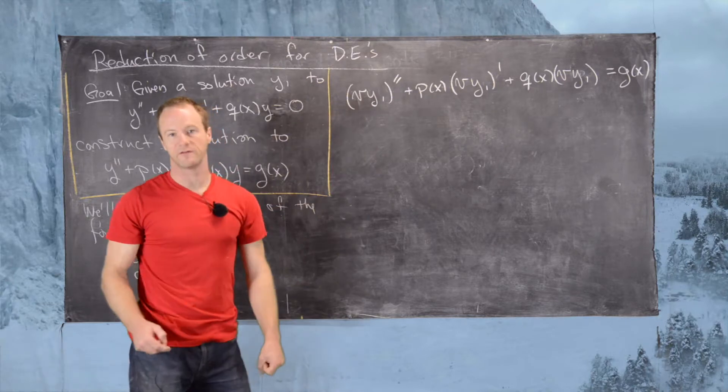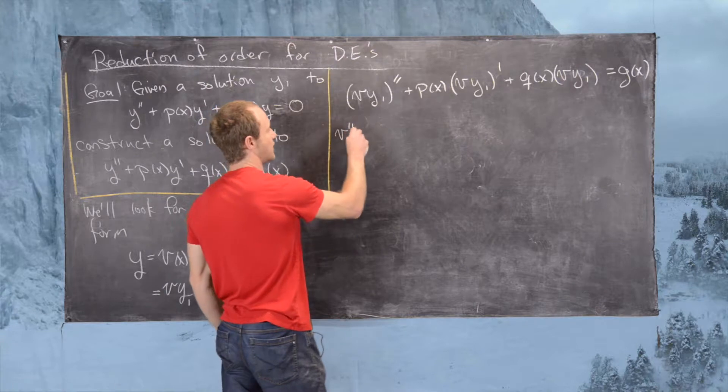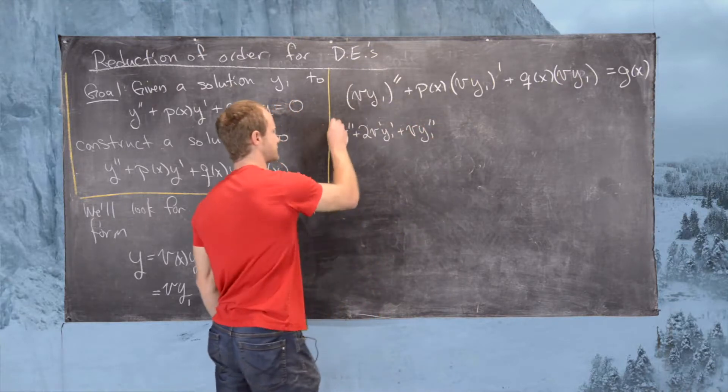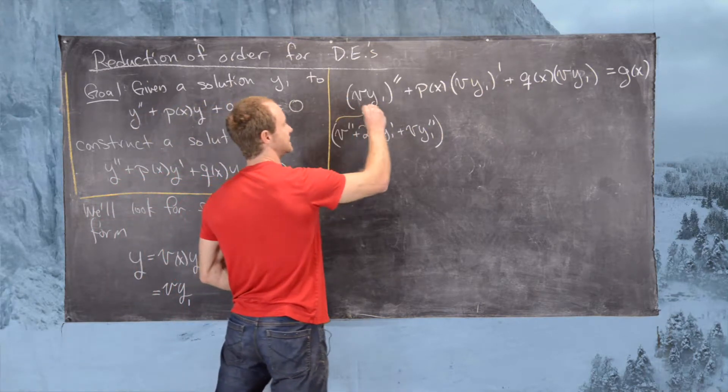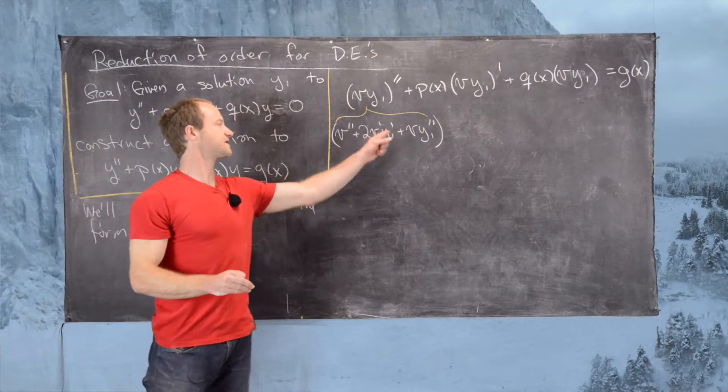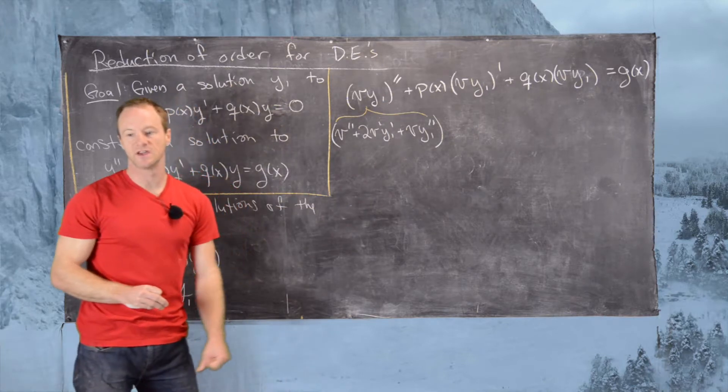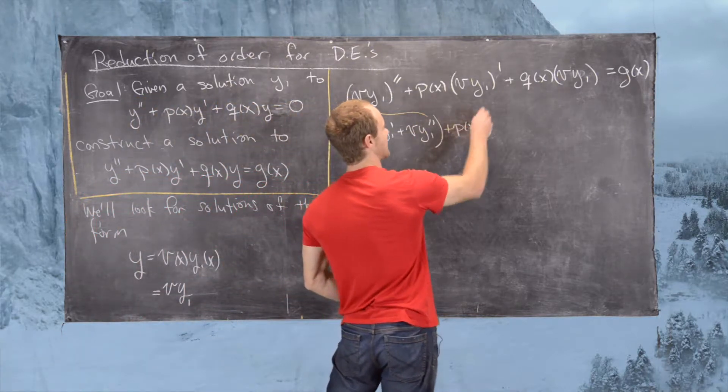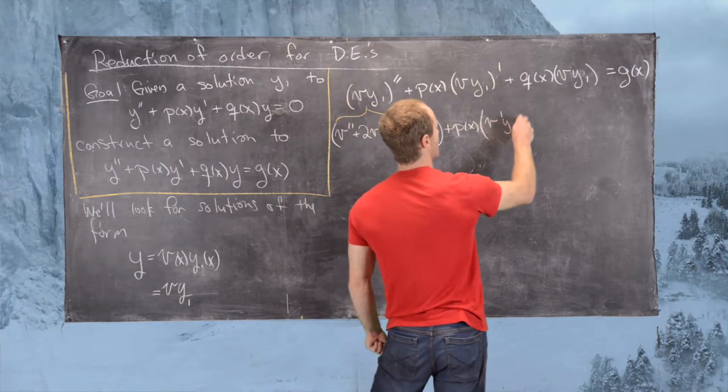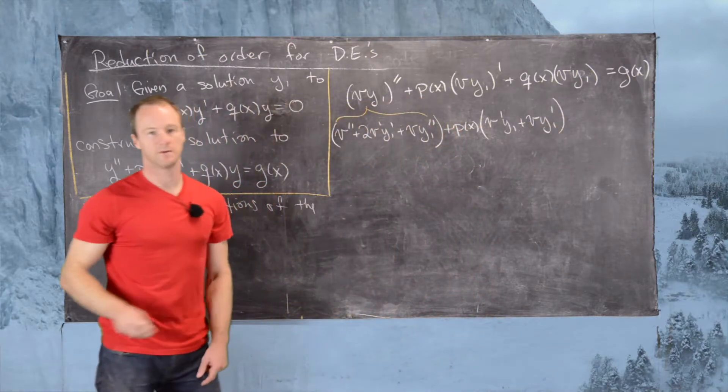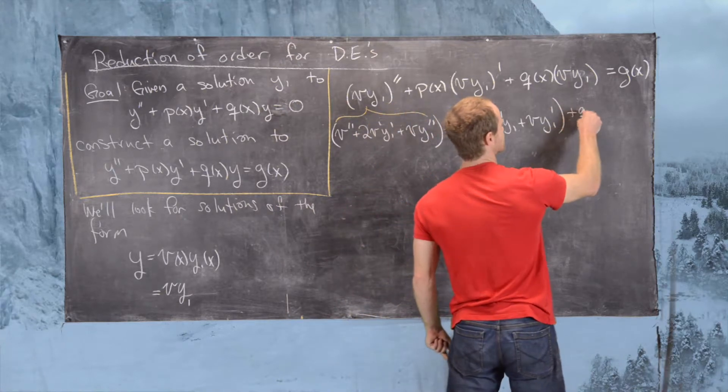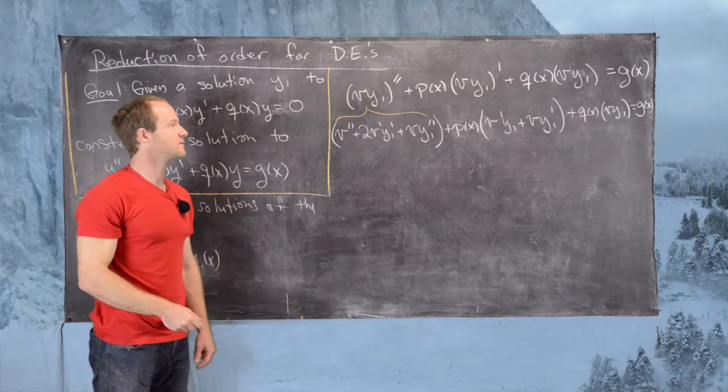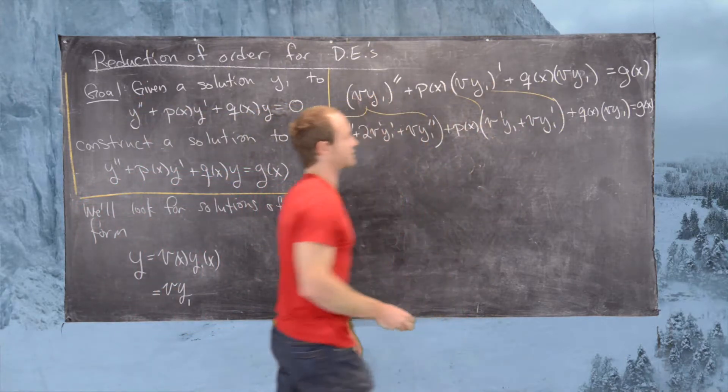Now we need to take the second derivative of this product of functions. So that will give us v''y1 + 2v'y1' + vy1''. Let's notice that this is spreading out into that term. If you notice, there's something going on here that looks like squaring a binomial. In fact, taking higher derivatives is related to the binomial expansion theorem. Now we'll write, this is plus p(x), and now we need to take the derivative with the product rule, so we have v'y1 + vy1'. And then finally, we have q(x) times, we did not take a derivative here, so we can just write that as is.